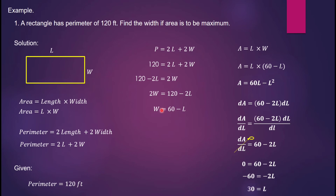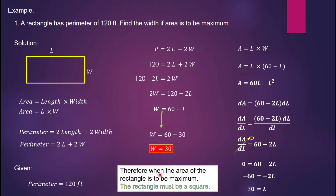Substitute the value of L: W = 60 − 30, so W = 30. Therefore, when the area of the rectangle is to be maximum, the rectangle must be a square.